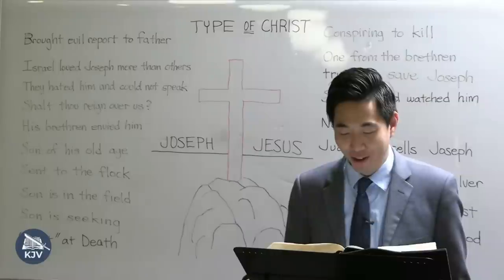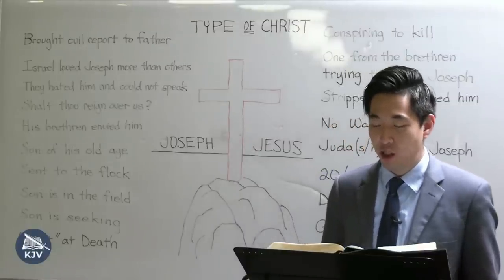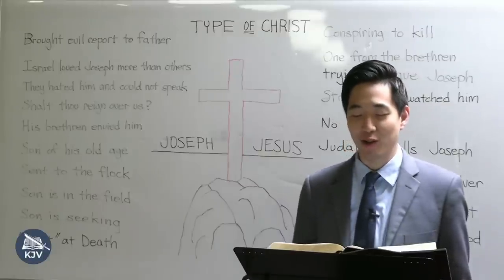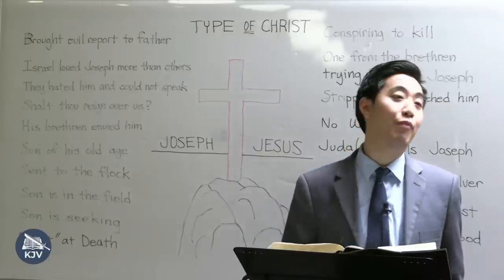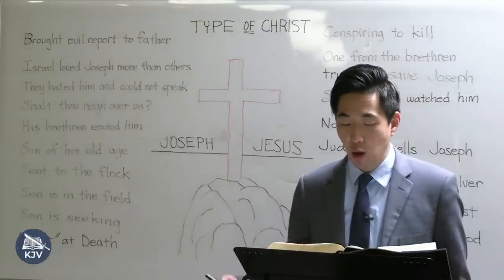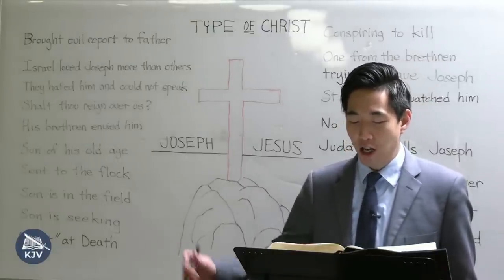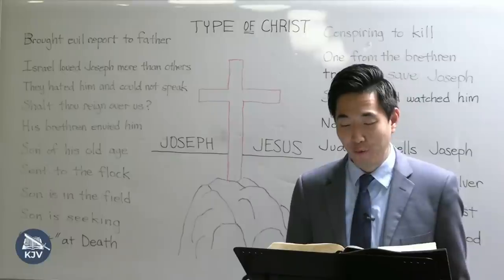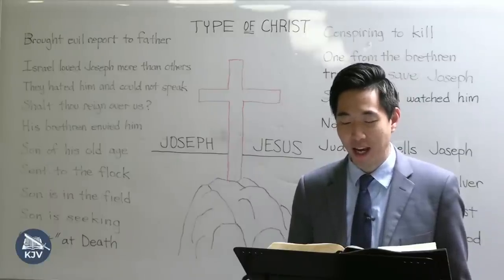This becomes even worse at verse 3: 'Now Israel loved Joseph more than all his children.' That just makes things worse. Israel is another name for Jacob. So Jacob, the father, loved Joseph — the little tattletale — more than all his other brothers who were ratted out. So what a wonderful start of a story — you can tell this is going to have a happy ending.